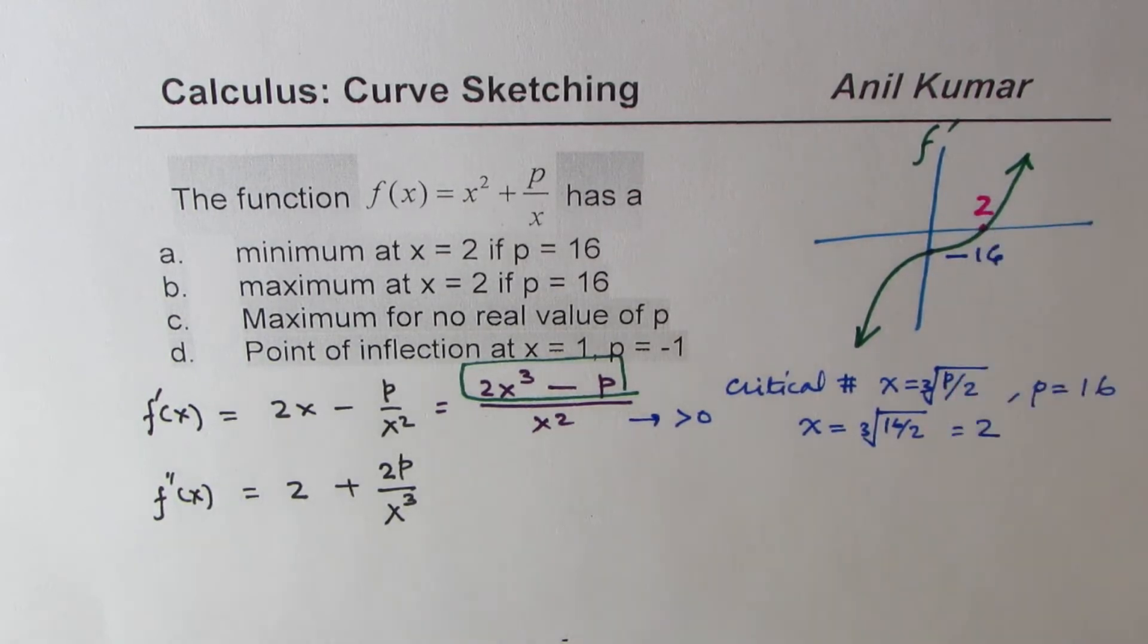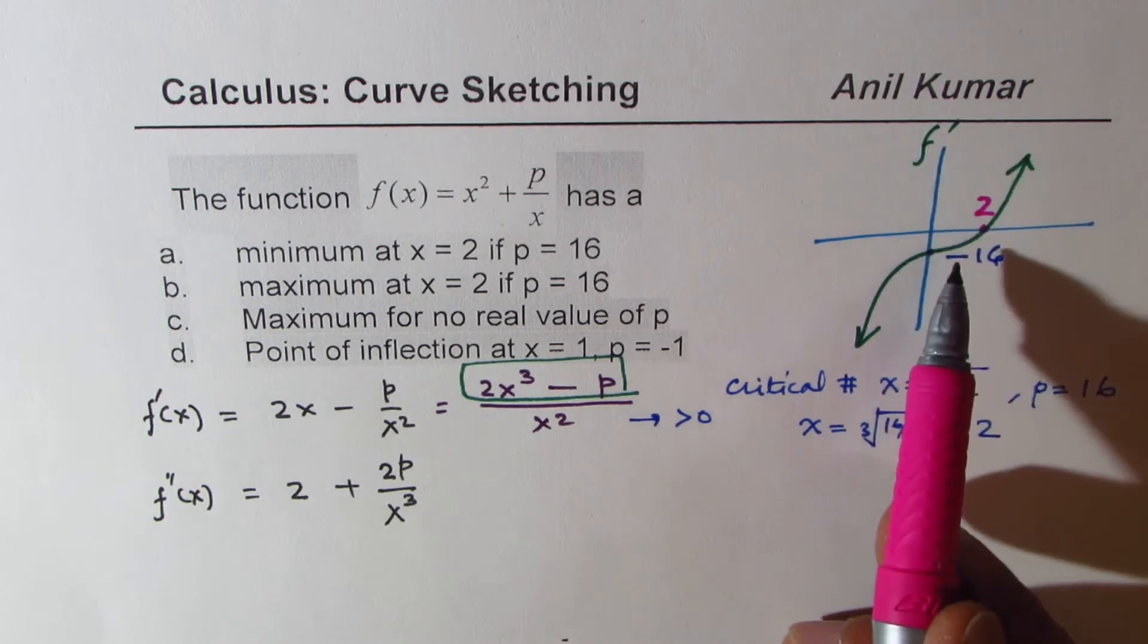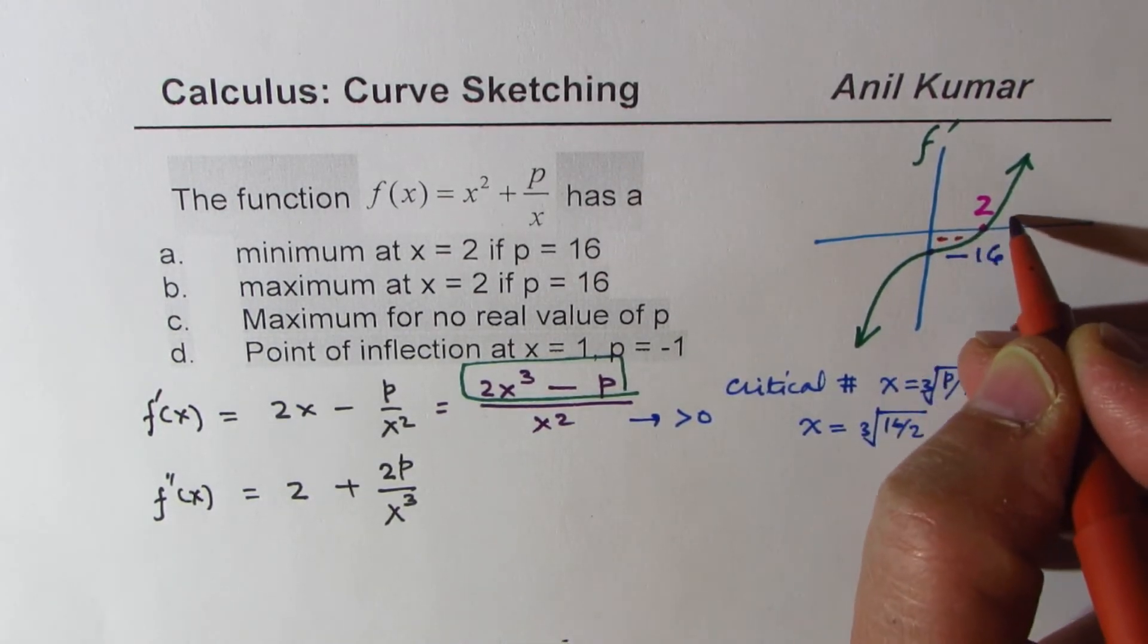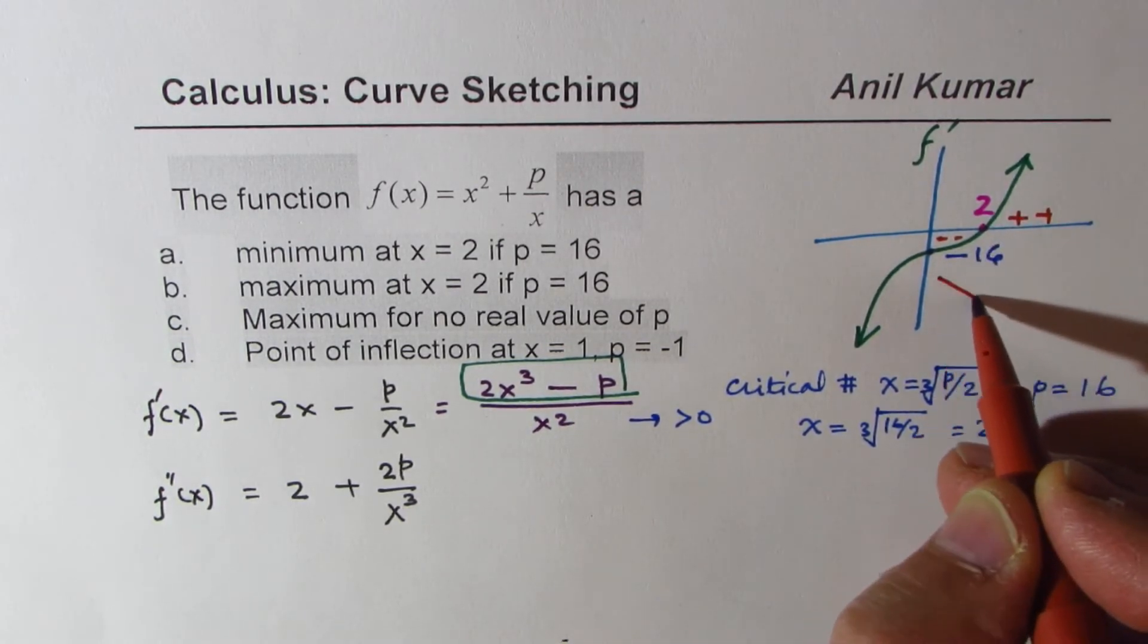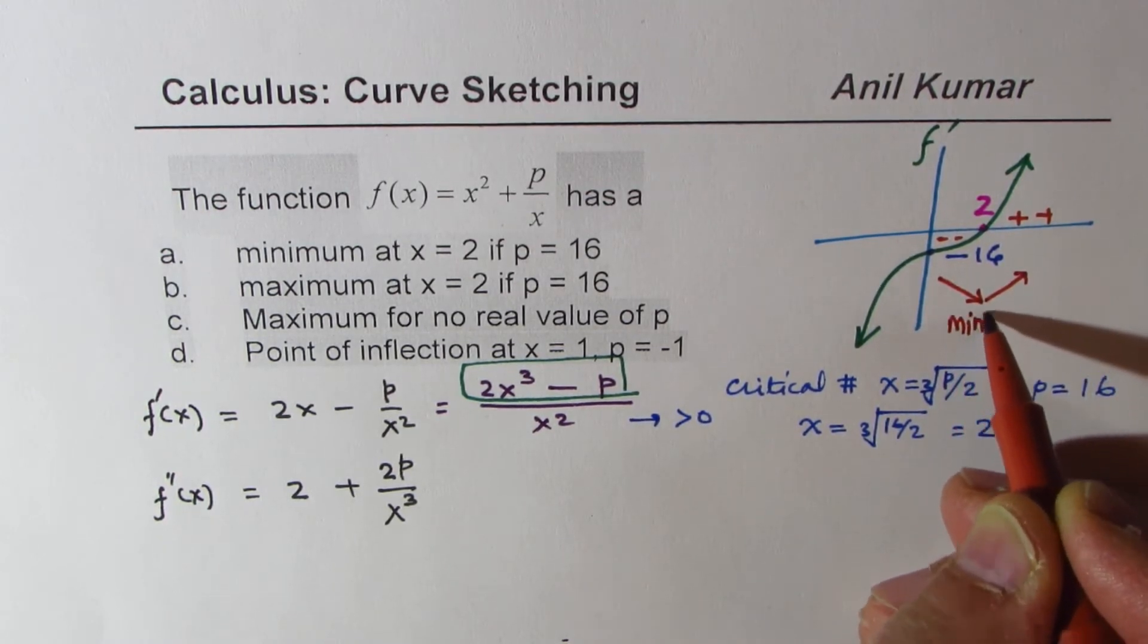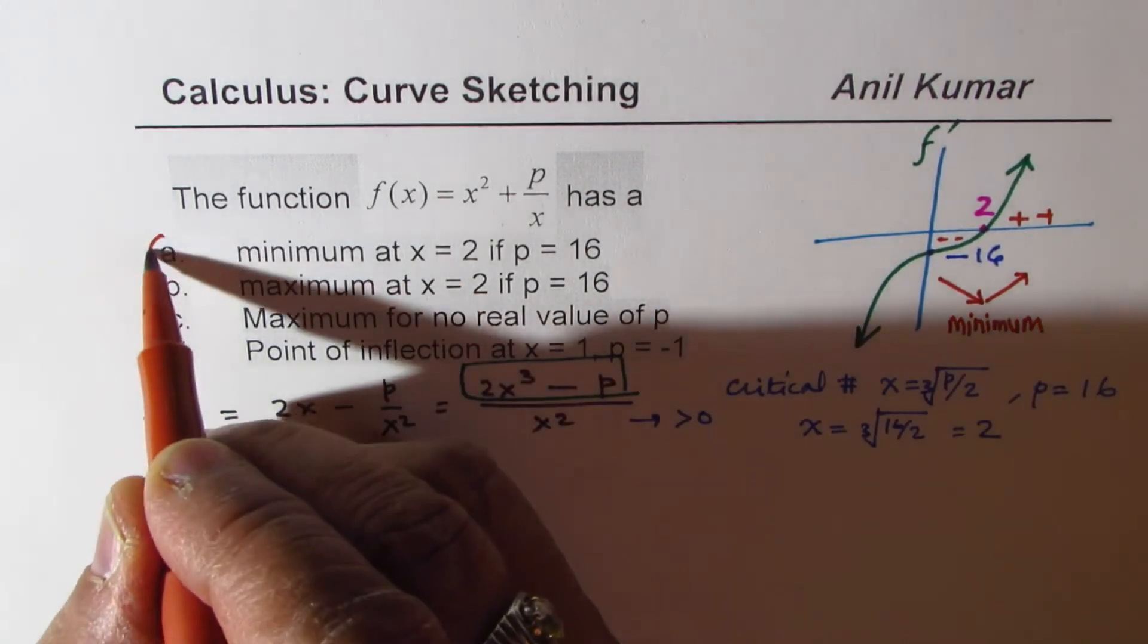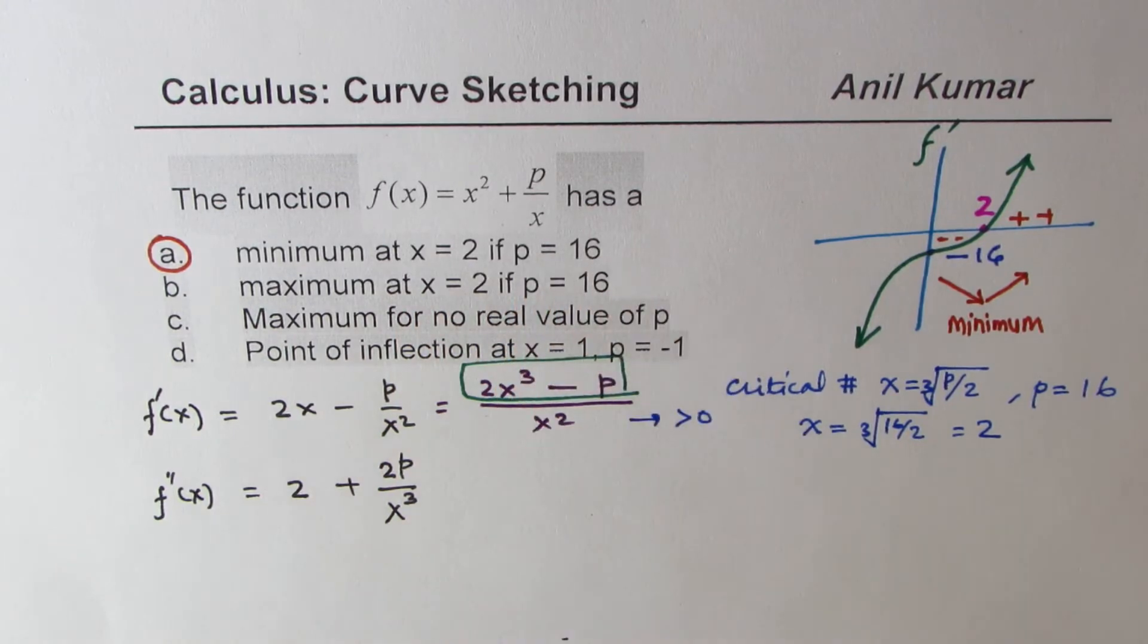So I hope the concept is clear. Now, what do you observe at zero? The derivative changes from negative to positive. So here, this is negative on the left side of zero, right? So this portion is negative, and on the right side, it is positive. That means rate of change is negative and then positive. That means we have minimum. Is that clear? So the first option is correct. Minimum at x equals 2 if p is equal to 16.